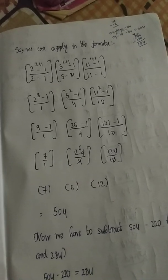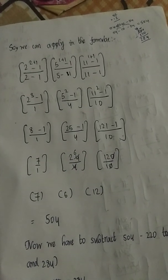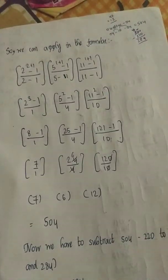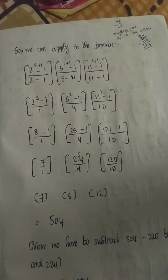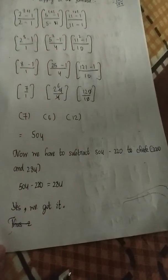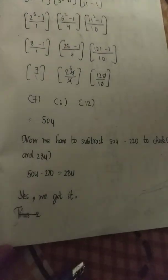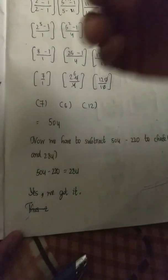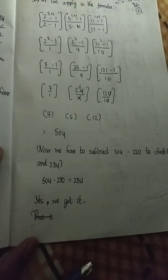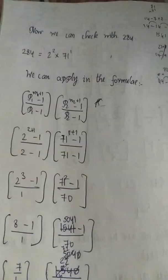This equals 7 into 24/4 into 120/10, which gives 7 into 6 into 12, equal to 504. Now we separate: 504 minus 220 equals 284. Yes, we got it — the sum of divisors of 220, excluding itself, equals 284.